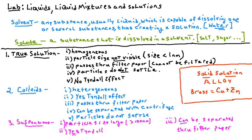A good example of an alloy is brass, which is made of copper and zinc. To make a solid solution, you melt the copper and zinc, combine them, and when the mixture hardens you have a solid solution — an alloy.